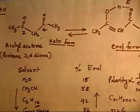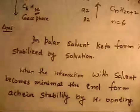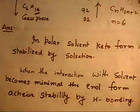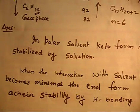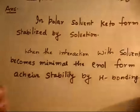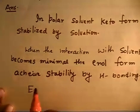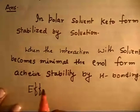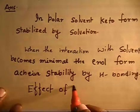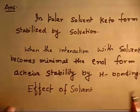To summarize: if you want more keto form, use a polar solvent; if you want more enol form, use a less polar or almost non-polar solvent. This is all about the effect of solvent on tautomerization. The heading of this topic is: Effect of Solvent on Tautomerization.